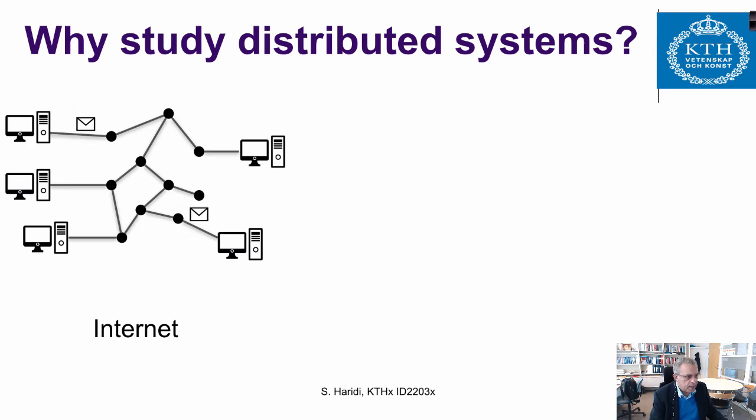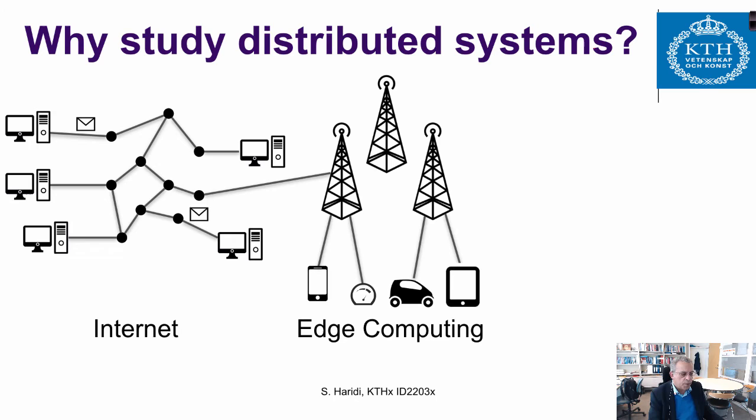The internet is a network of computers called routers that deliver messages to and from the edge nodes — your and my computer and other services. Edge computing is where you have lots of small devices like smartphones, sensors, and meters, all connected together by a wireless network, which is then connected to the internet backbone.